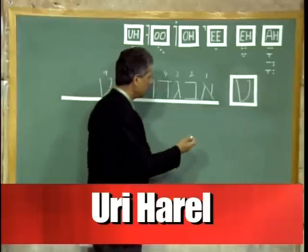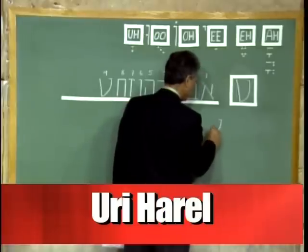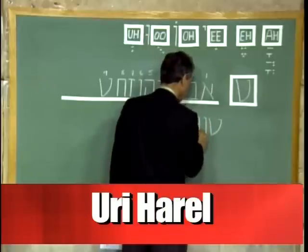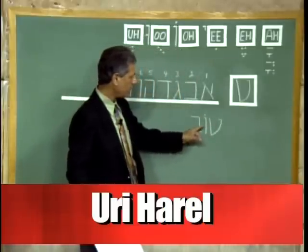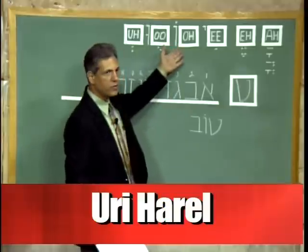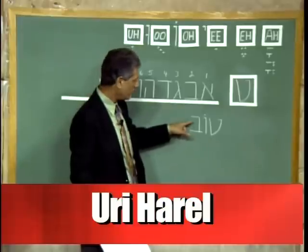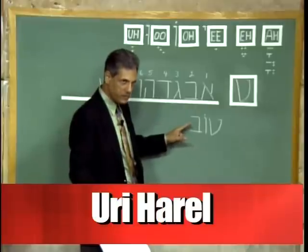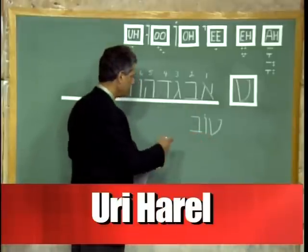Let's do some reading with the letter Tet. We have Tet, Vav, and Bet. The letter Tet, and a Vav, and a dot on top — that combination gives you Tov. And the letter Bet without the dot in the middle is a V sound, not a B sound. So we read it Tov, Tov — that means good.